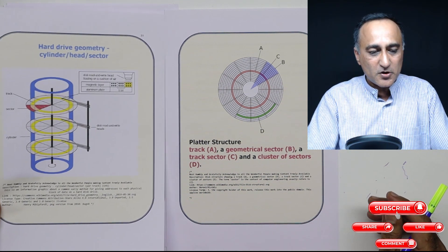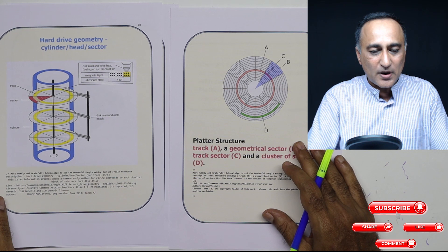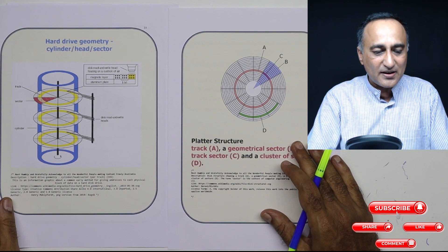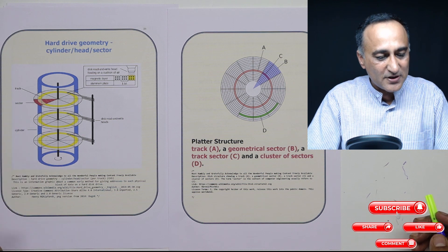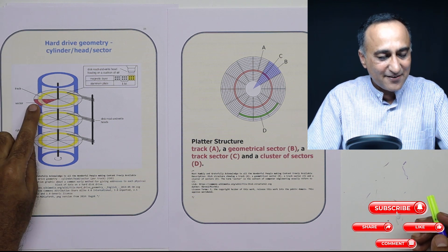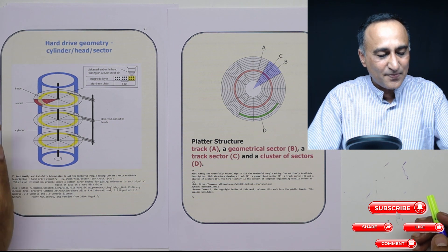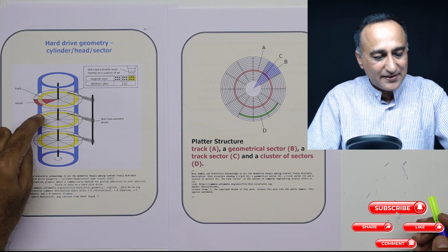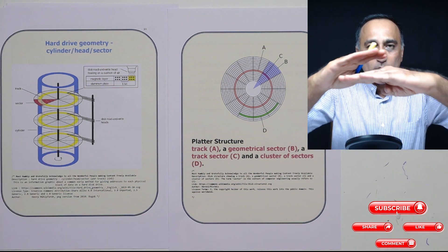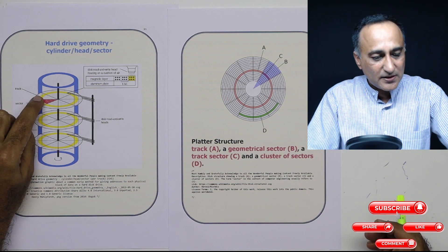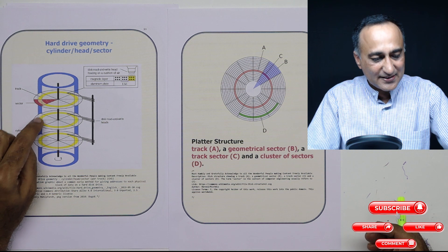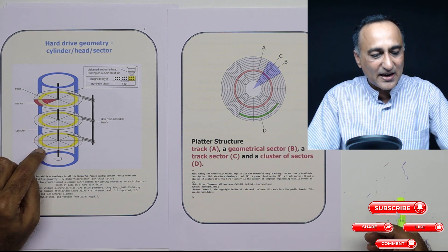Now one more diagram—the geometrical diagram—which gives you an idea of the hard disk geometry, will give you a complete idea of the working of the hard disk. This yellow fellow is the track, this red fellow is the track sector. Now what happens is if you look at the track here, all these tracks will be above as well as below. The track below this, and the track below this, all are referred to as a cylinder.